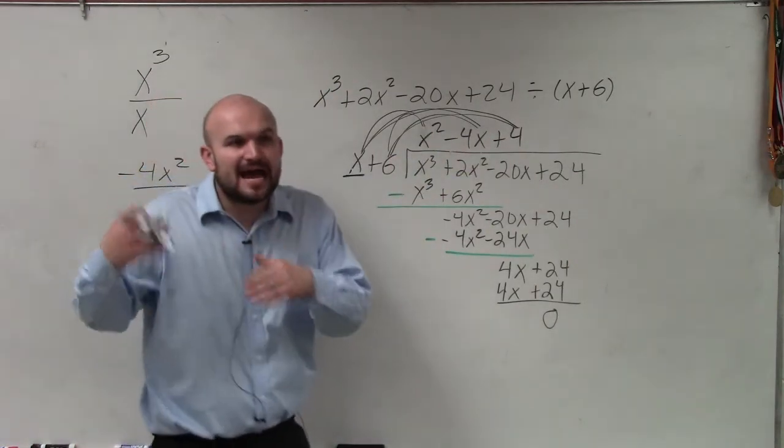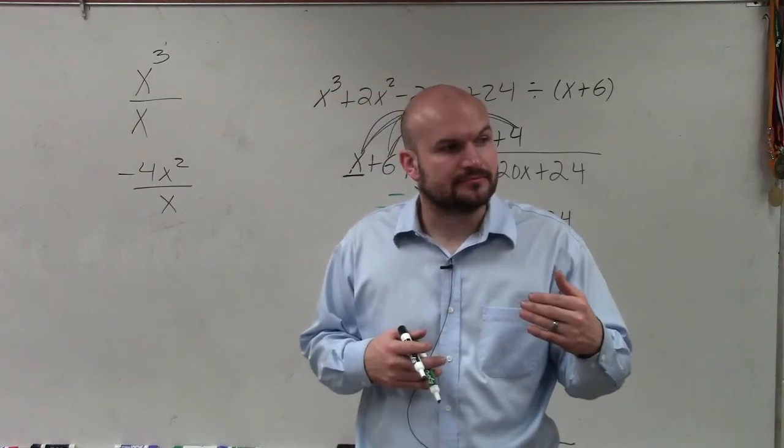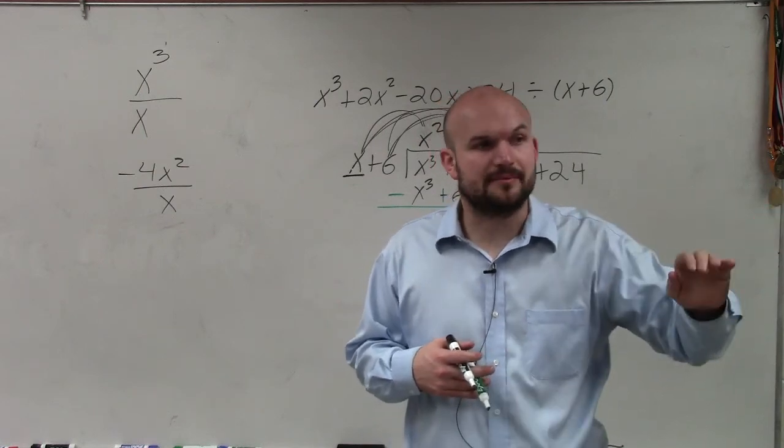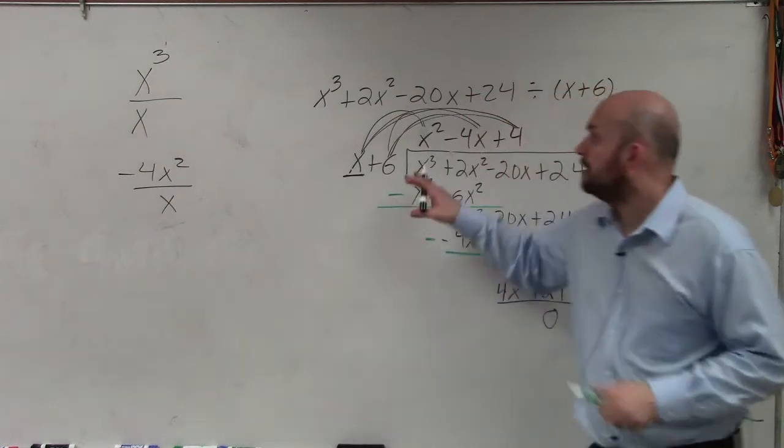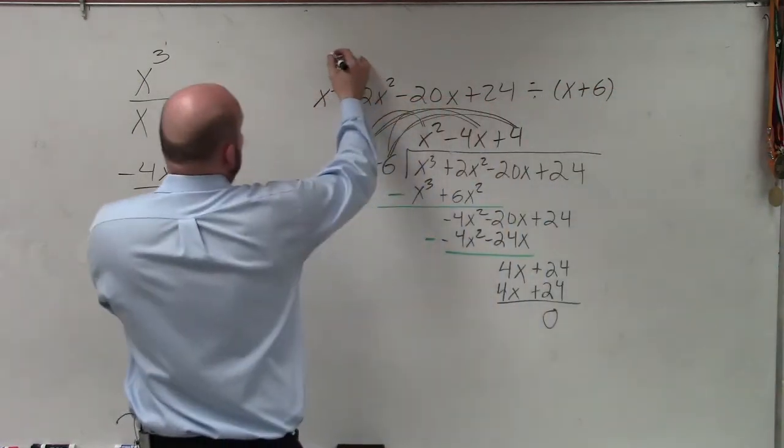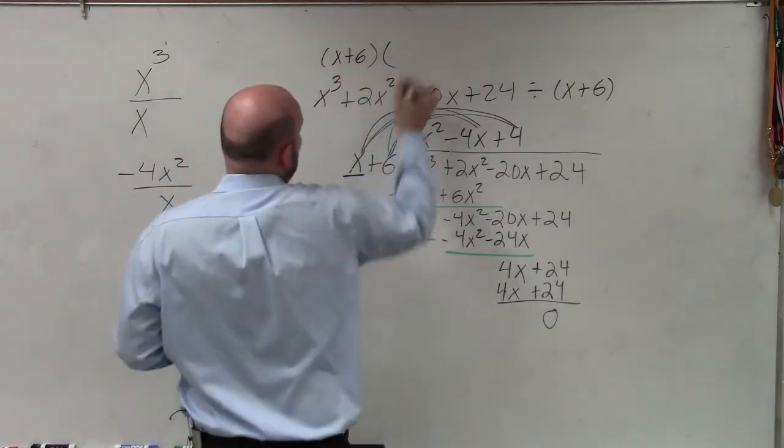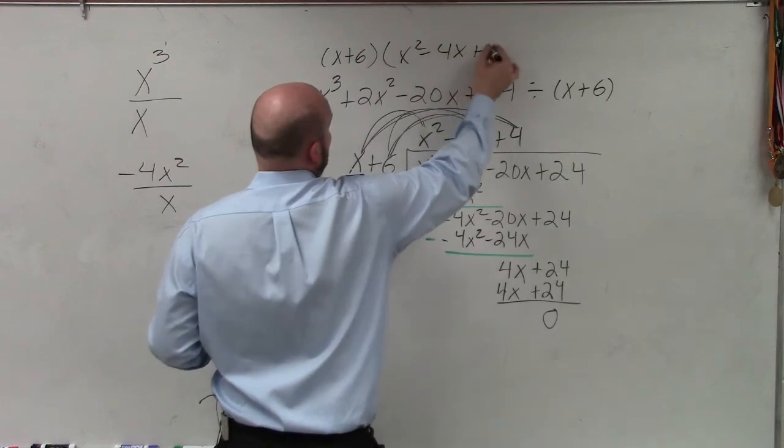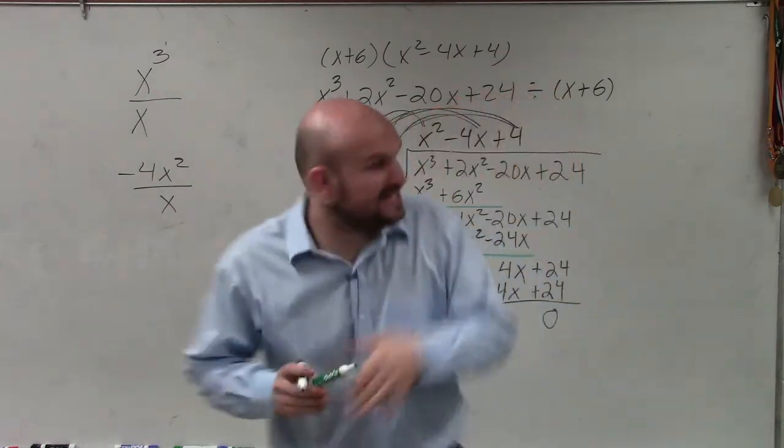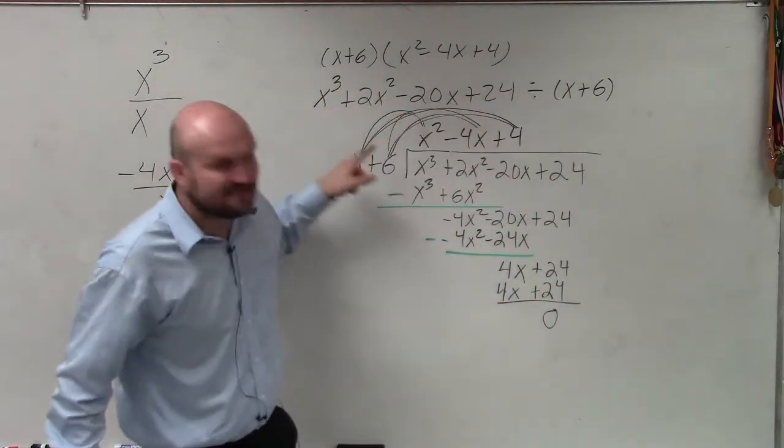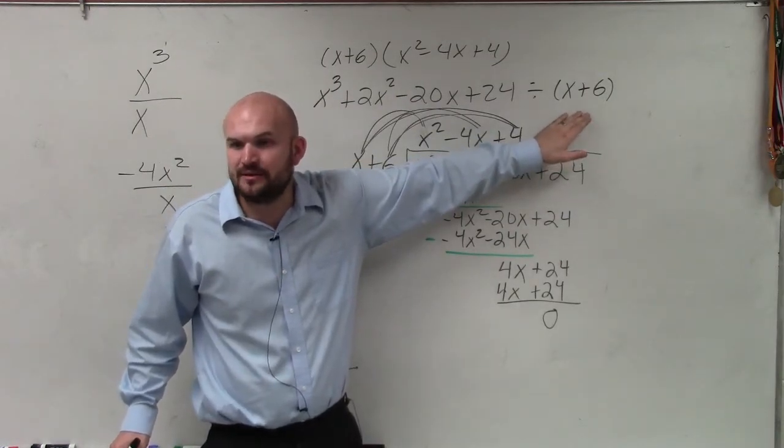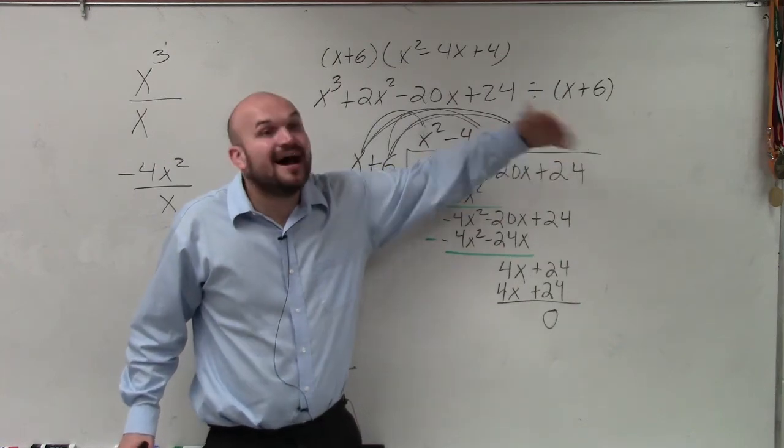Any time we have a division problem, what I want you to understand is that x plus 6 times x squared minus 4x plus 4 is equal to your polynomial. So what's important about this is since this evenly divides into this polynomial, this is called a what? What happens if we have something that evenly divides into it? It starts with an f. A factor.